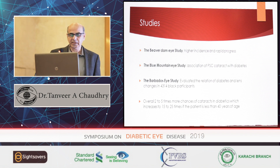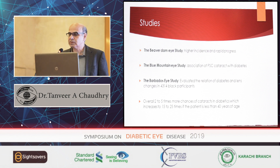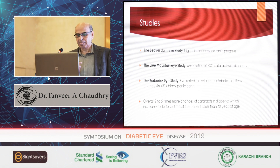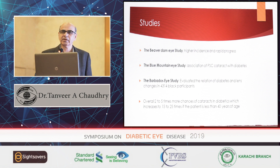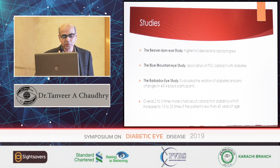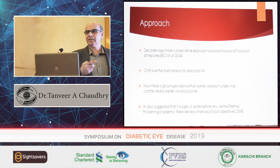Some studies indicated a higher incidence of cataract — the Beaver Dam Eye Study suggested incidence is more and progressive. The Blue Mountains Eye Study showed posterior subcapsular cataract is more prone in such cases. The Barbados Eye Study evaluated 4,314 participants and showed about 18% rise in cataract with diabetes. The Wisconsin Epidemiological Study showed an 8 to 24% rise, and 2 to 5 times cases of cataract in diabetics, increasing to 15 to 25 times in younger diabetics.